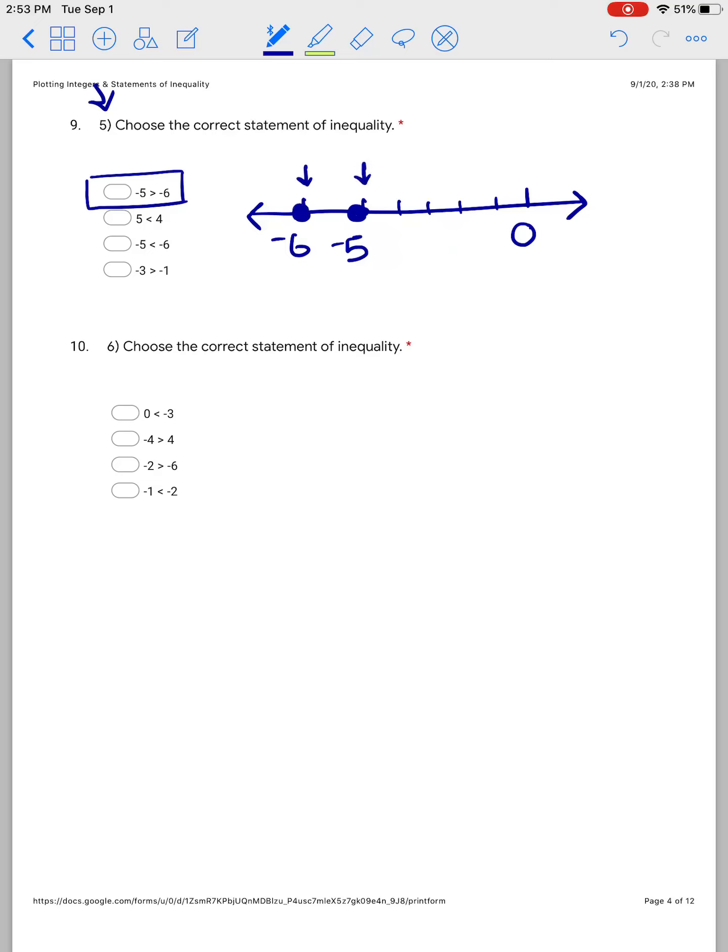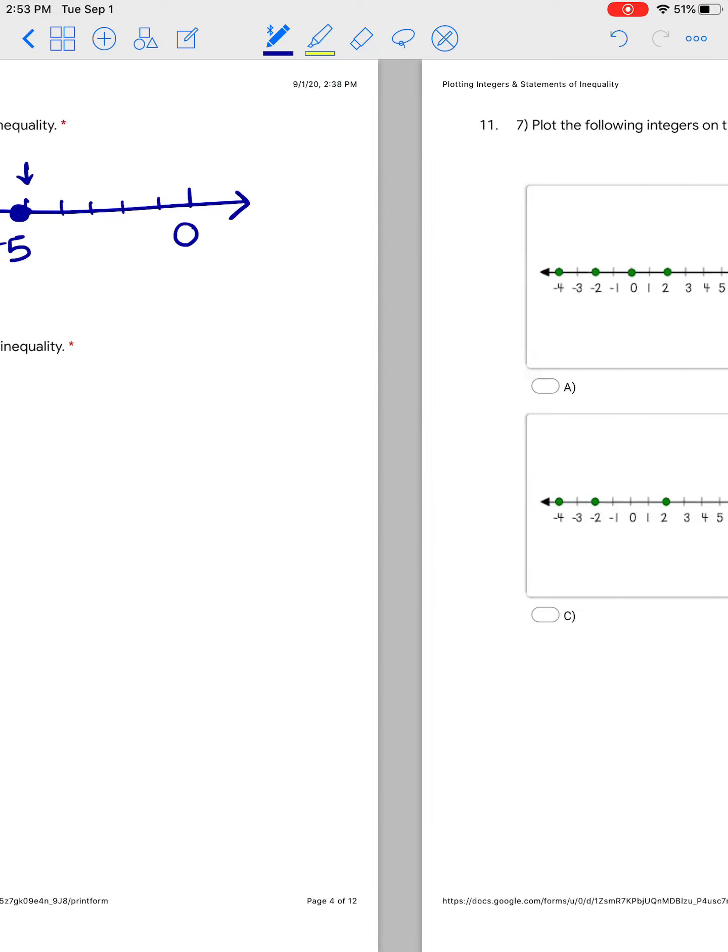So by doing so, I am justifying my statement of inequality by showing that negative 5 is further to the right, so it's greater. You're going to do the same thing for number 6. You're going to pick which one is true and draw that number line.